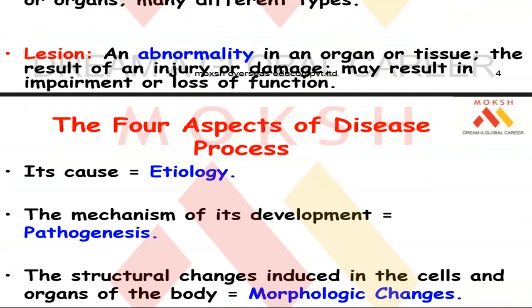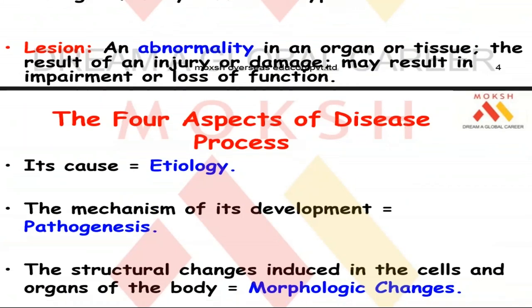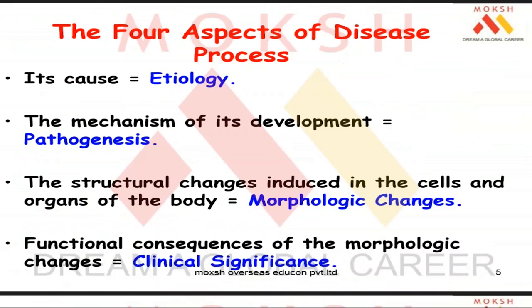There are four aspects of the disease process. Certain terms will be repeated throughout the learning of pathology, so we must go through the ABCs of pathology terminologies. The cause of a disease — for example, smoking causes lung cancer — is what we call in pathology as etiology. Etiology basically refers to the cause: this thing causes that disease.